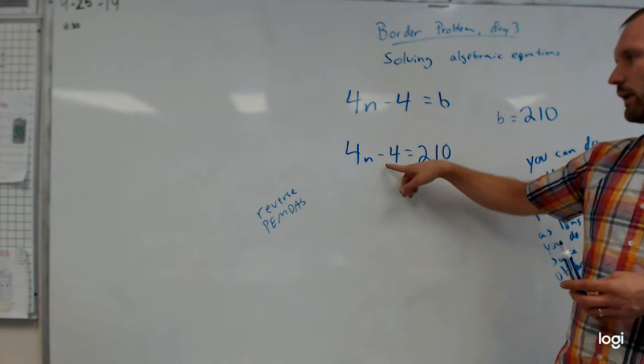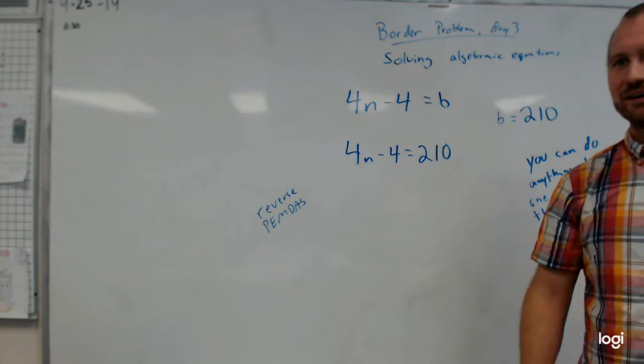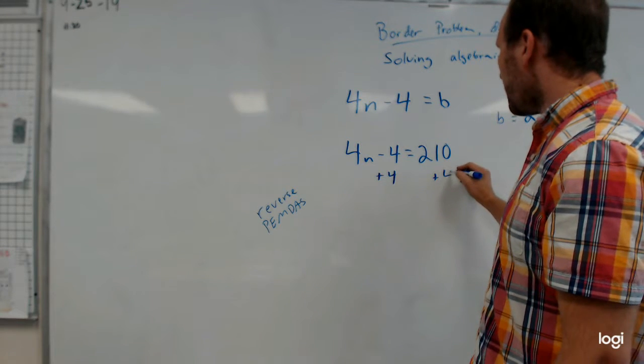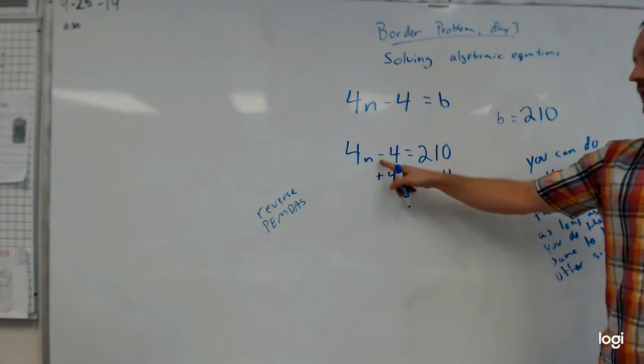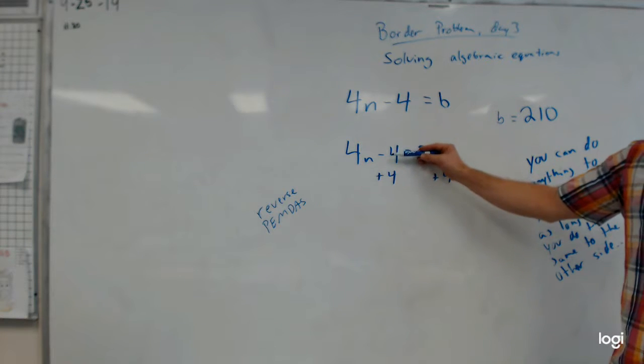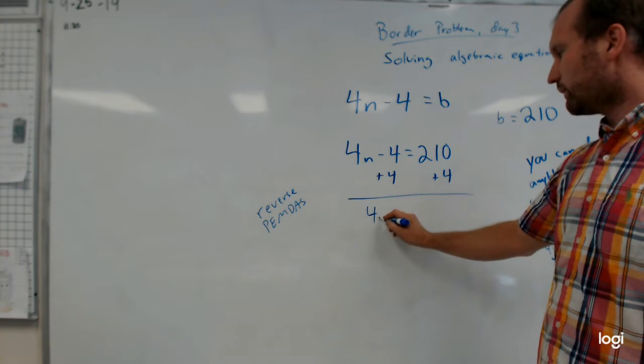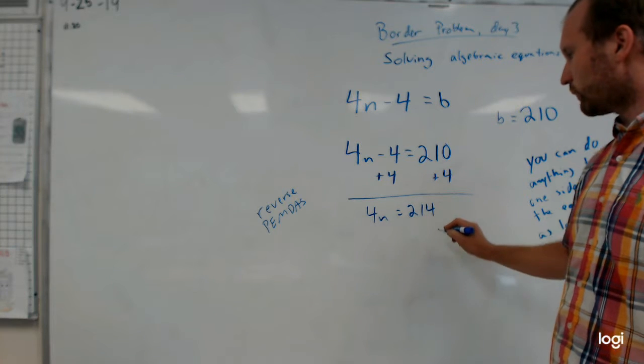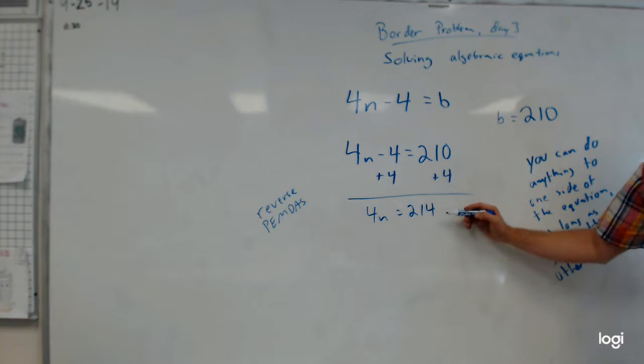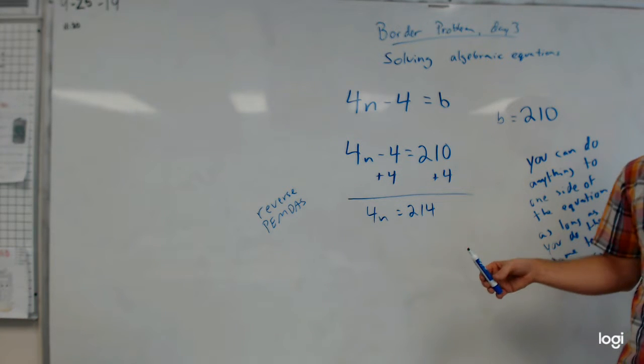But how do I get rid of a subtraction? How do I get rid of a minus four? What do I need to do? So many hands. Yeah. And in this case what I'm really doing is I'm adding four to both sides. So I'm trying to get rid of this minus four. Right because that's kind of reversing PEMDAS. I'm getting rid of that by adding four. And so then I'm also going to add four to this side. So that gives me 4n is equal to 214. Does everyone see how I got this? Yes. Technically there's like a plus zero here because the negative four plus four is just zero.